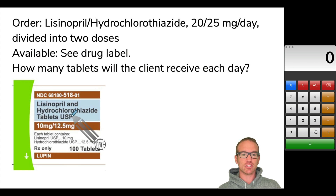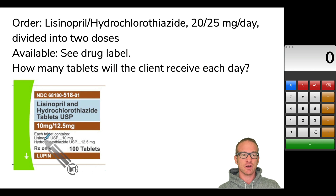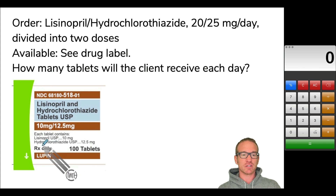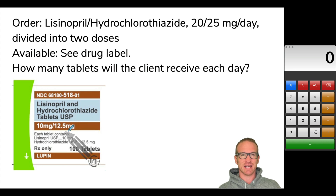The second medication is going to be the second strength, and most drug labels will even break it down right here. We can see that each tablet contains 10 milligrams of the lisinopril — first word, first strength. And then each tablet also contains 12.5 milligrams of hydrochlorothiazide — second medication, second strength.